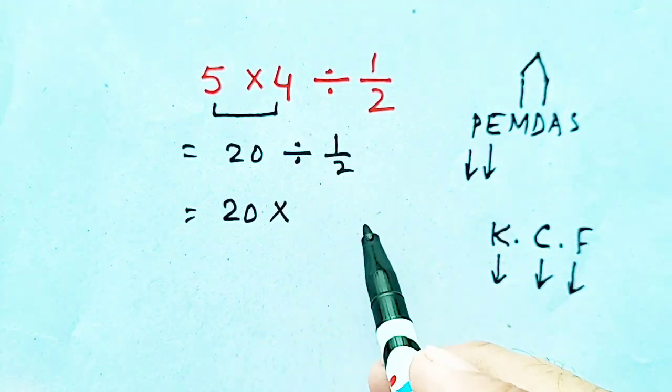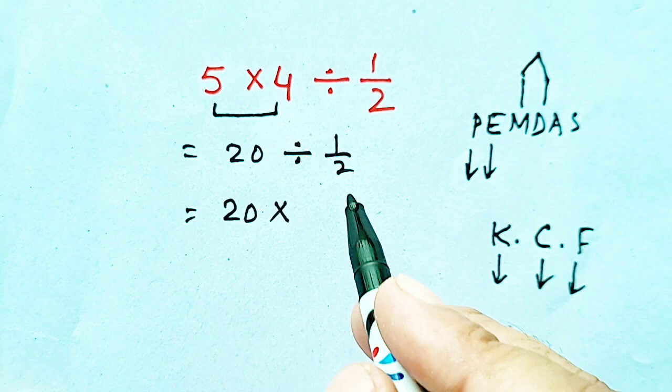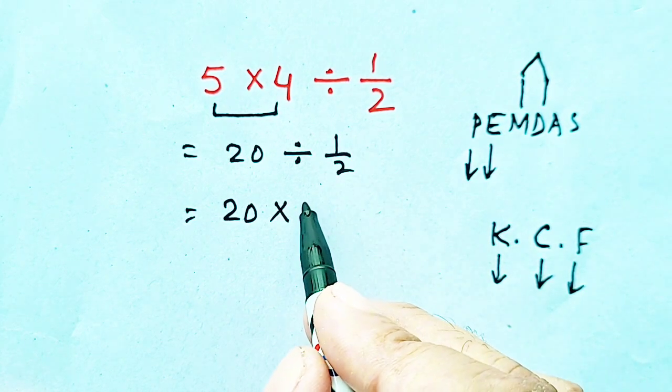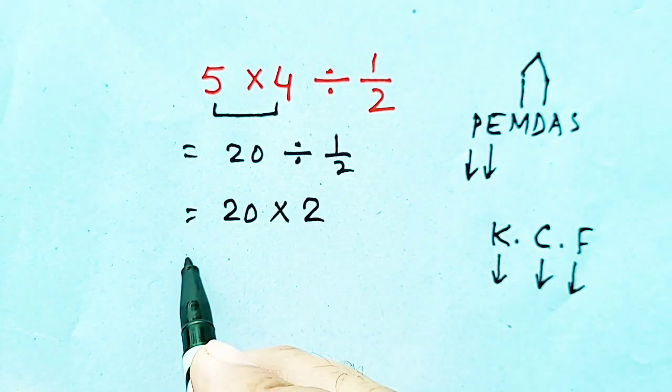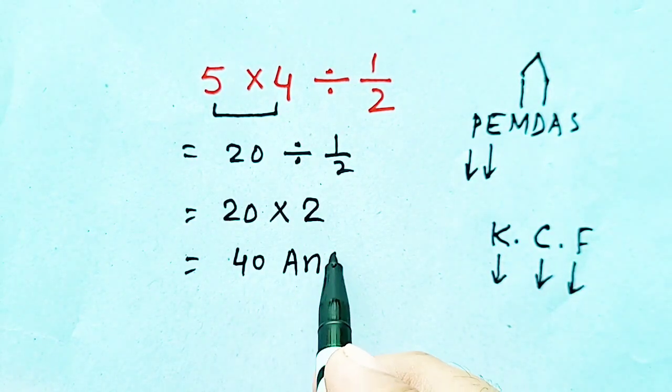we have to flip 1/2, it will become 2. So 20 times 2 is 40, which will be our correct answer.